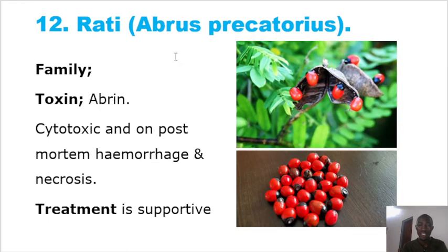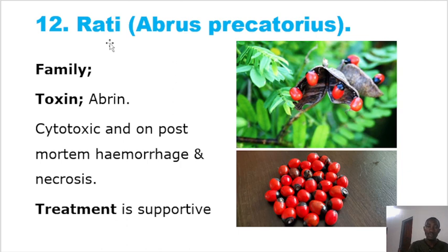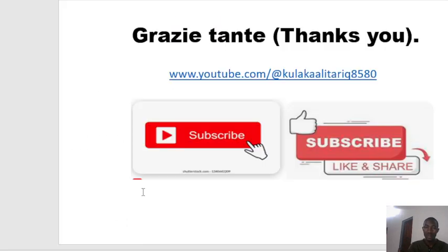Another common toxic plant is rati, which is Abrus precatorius. The seeds are red and black in color and look attractive, but even chickens avoid them. The toxin is abrine, which is highly toxic and cytotoxic — it affects the cells. On post-mortem examination, you will see necrosis (death of cells and tissues) and hemorrhages. Treatment is supportive.